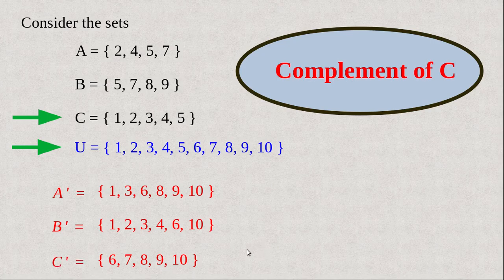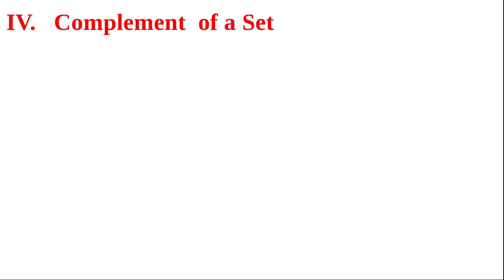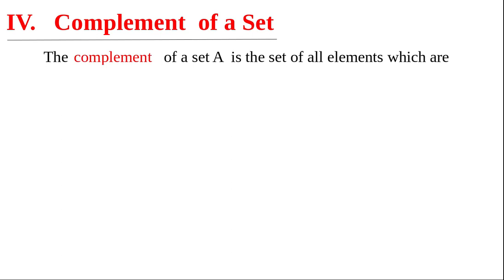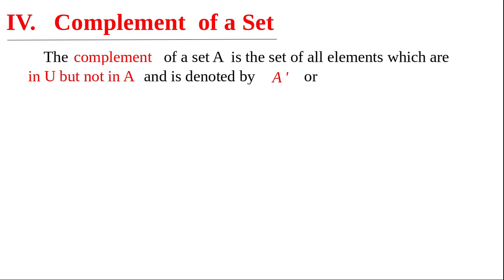In general, the complement of a set is the set of all elements which are in the universal set and not in that set. Now let us write this fact in your notebook. Our fourth operation: complement of a set. The complement of a set A is the set of all elements which are in U but not in A, and is denoted by A dash or A superscript C. These two symbols are used to represent the complement of a set.